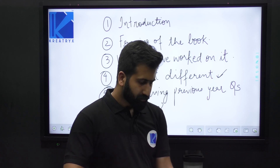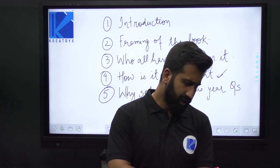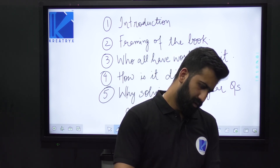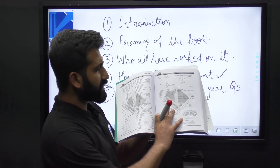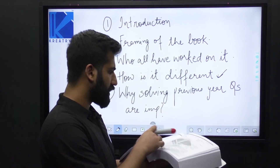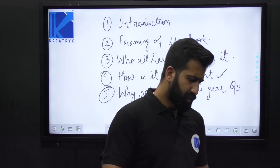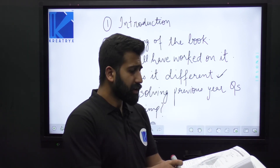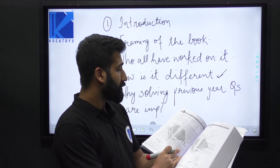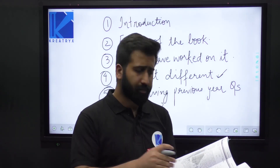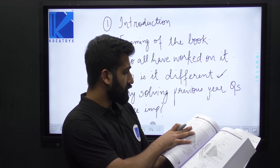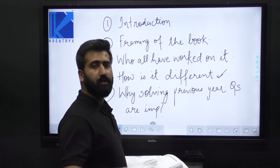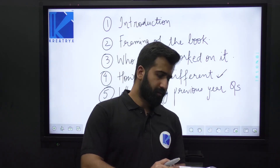For example, in heat transfer in 2014, there was a question from the chapter on conduction where three slabs are shown and you have to find the thermal conductivity of the middle slab. Basically, you had to draw the resistance circuit diagram and apply the basic concept. Similarly, the same concept was repeated in 2016, where you had to find the interface temperature — in that question also, you had to draw the resistance circuit diagram and apply the basics of Fourier's law.